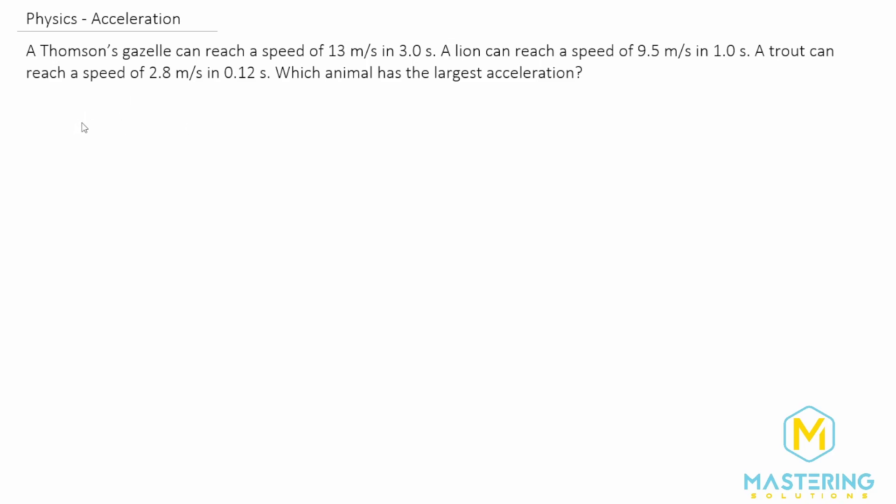To do that, we'll use the acceleration formula, which is the change in velocity over the change in time. Now, we don't really have to worry about it for this problem, but just for practice, delta anything always means final minus initial. So velocity final minus velocity initial, and t final minus t initial. But in this one, they give it to us as delta v and delta t, so we don't have to worry about that.